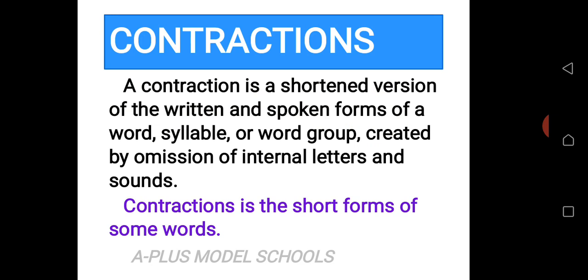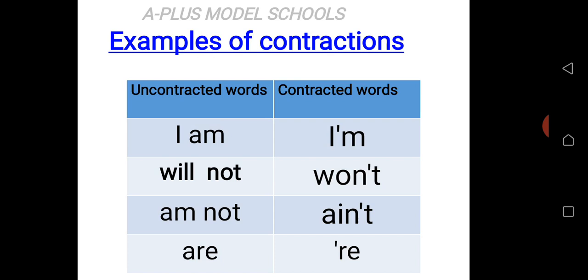Now let's move to the examples of contractions. These are the examples of contractions. You must always note that the use of apostrophe helps to form a contraction, and it is always formed when letters are omitted. I said the use of apostrophe helps in forming a contraction, and it is always formed with the omission of letters. You omit some letters then you add an apostrophe. That is how we form a contraction. Now look at the examples.